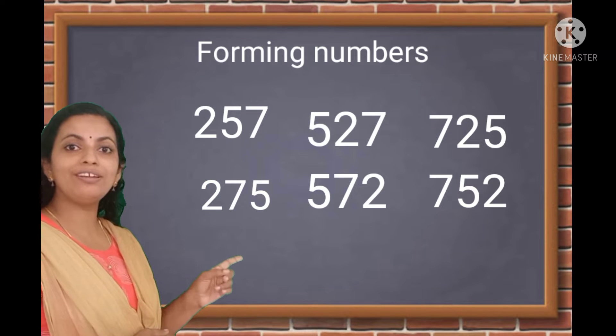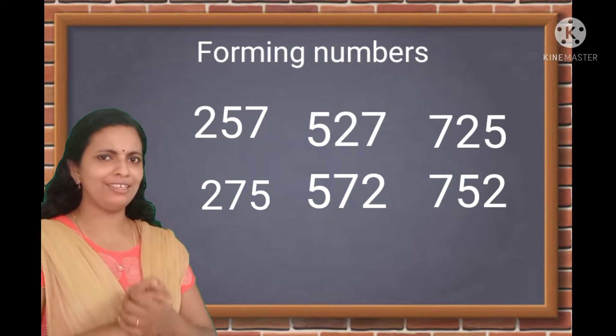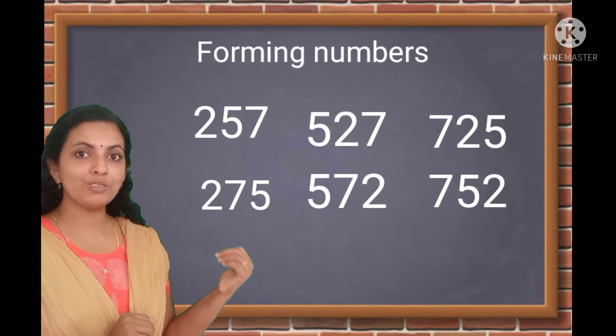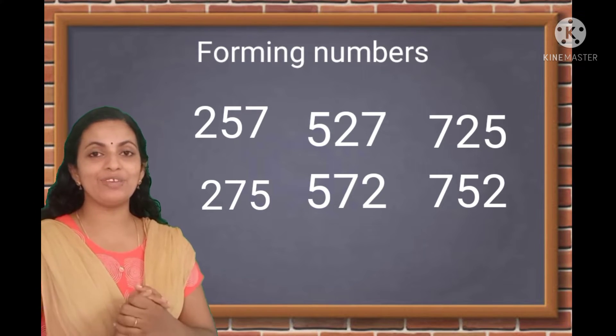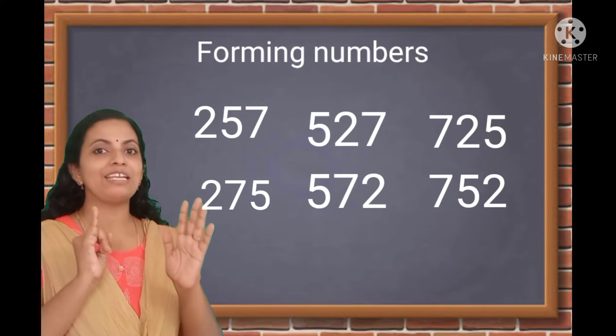So, total how many numbers we got? Six numbers. Is there any other possible numbers? No. Okay. So, using three different digits, we can make six numbers.